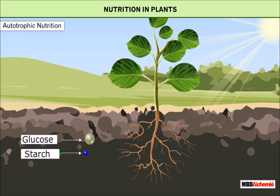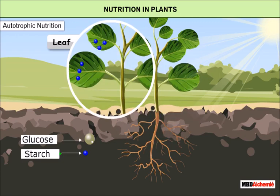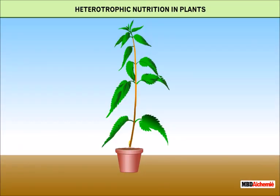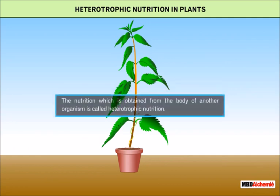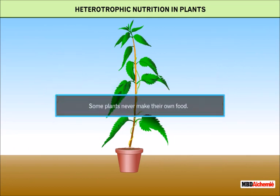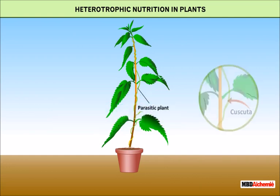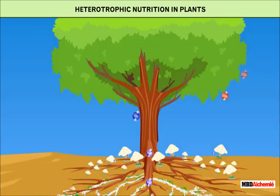Glucose is stored in the form of starch in plant parts like roots, stems, and leaves. Heterotrophic nutrition is the nutrition obtained from the body of another organism. Some plants never make their own food; instead they obtain nutrition from other plants. Such plants are called parasites, for example, Cuscuta.